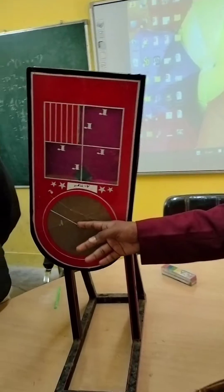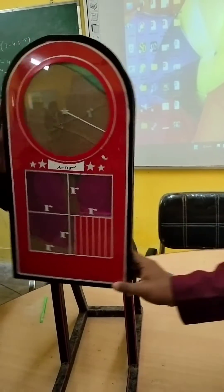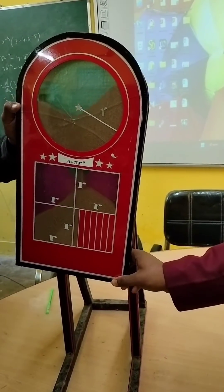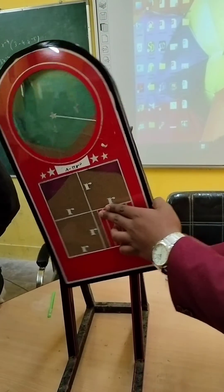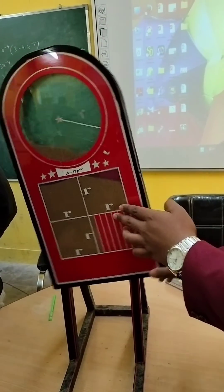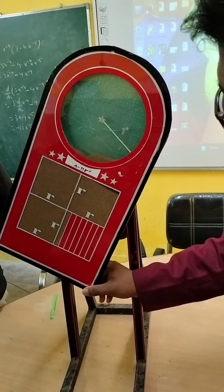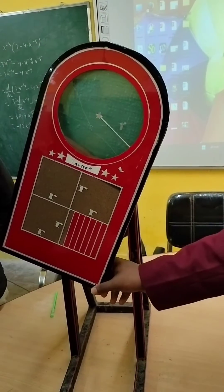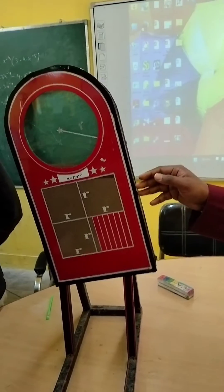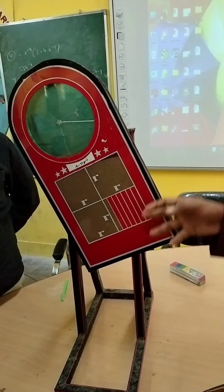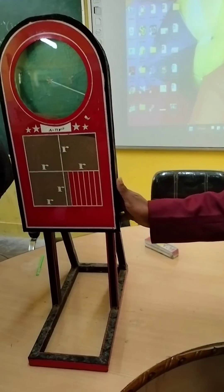When I rotate this model fully 180 degrees, all the sand from the circle section fills the square section completely. From this we get the idea that the area of a circle is 22 by 7 times the area of this square. So this was the model — thank you.